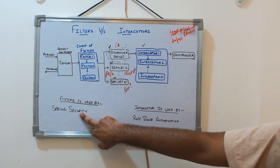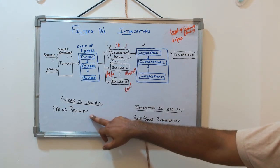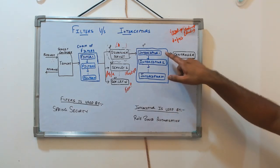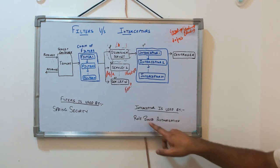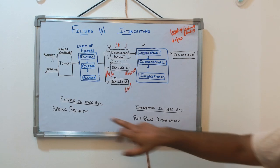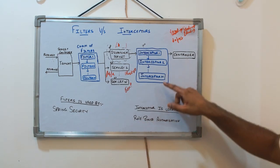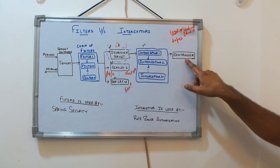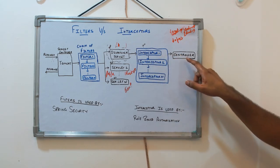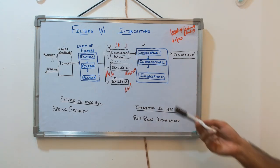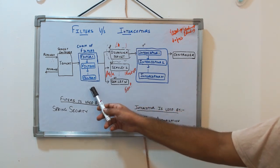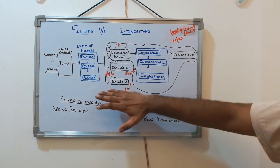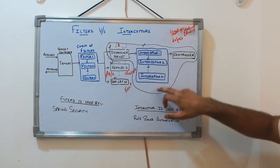A good example of a filter is Spring Security. Spring Security's authentication and authorization actually uses filters, and it is agnostic to the servlet — you can apply it to multiple servlets with no problem. An example of an interceptor is a role-based authorization interceptor. Security also has the capability of doing role-based authorization, but interceptors can handle it too — before assigning to the controller, we can check whether the user has the required role to access the API. We can also say that whatever an interceptor can do, a filter can also do, but a filter has more scope because it operates at a lower level, before the request is even assigned to a particular servlet.